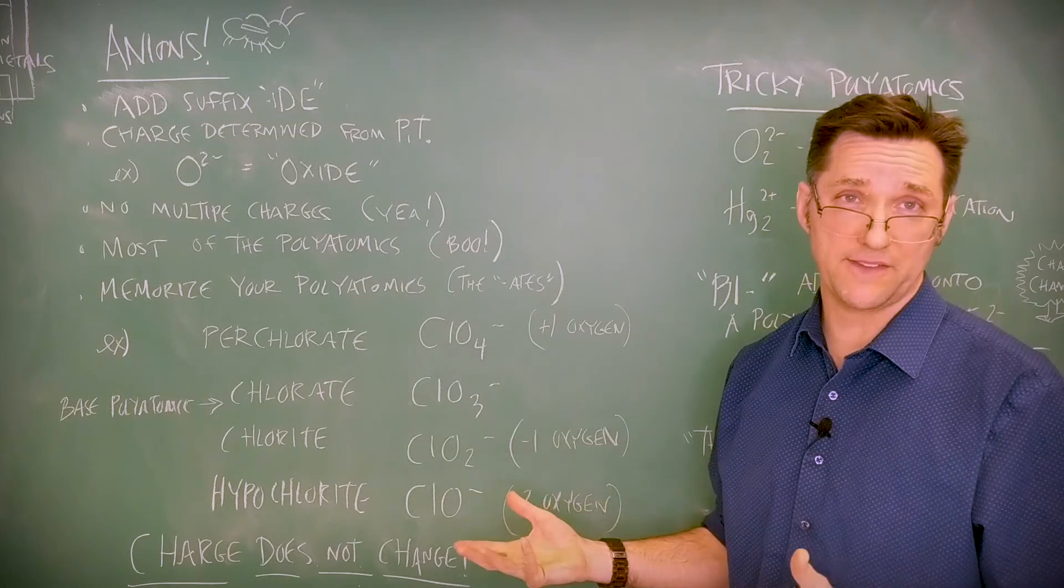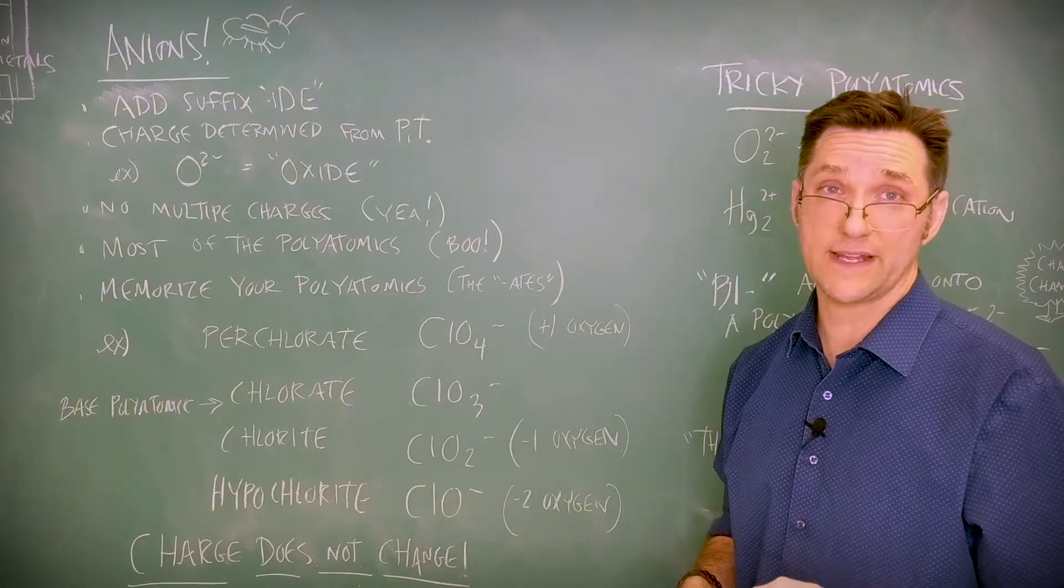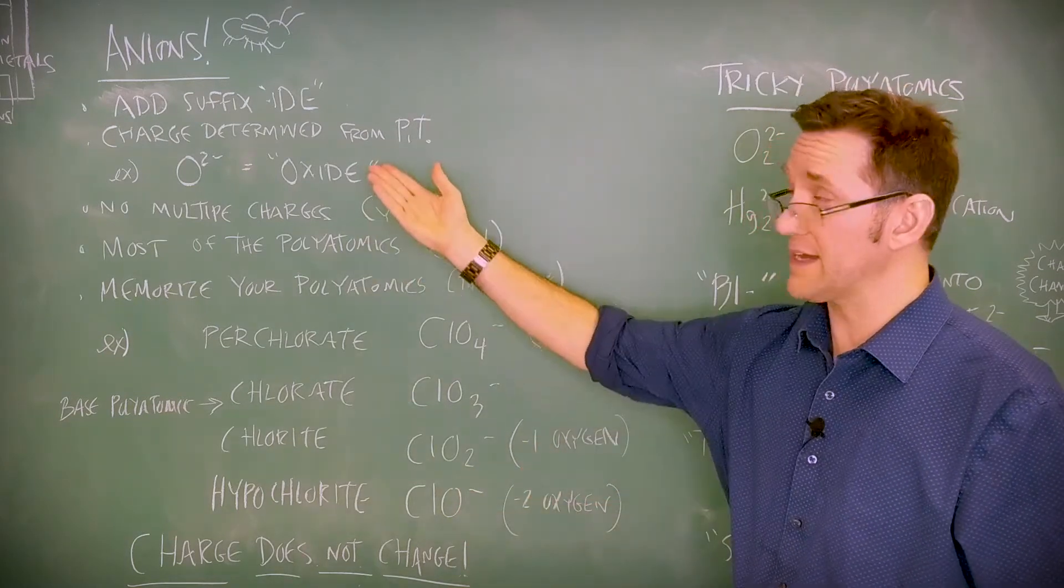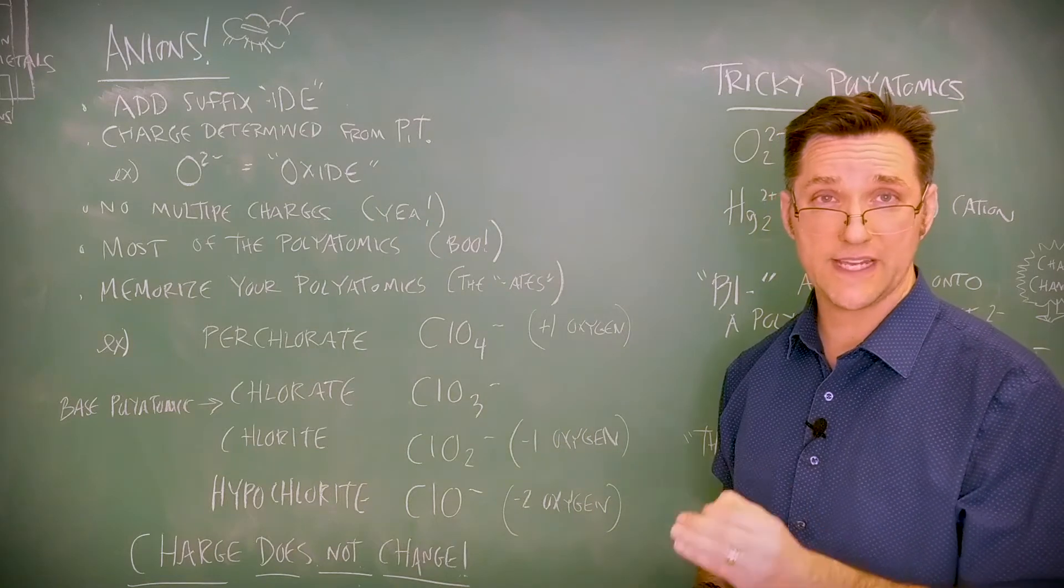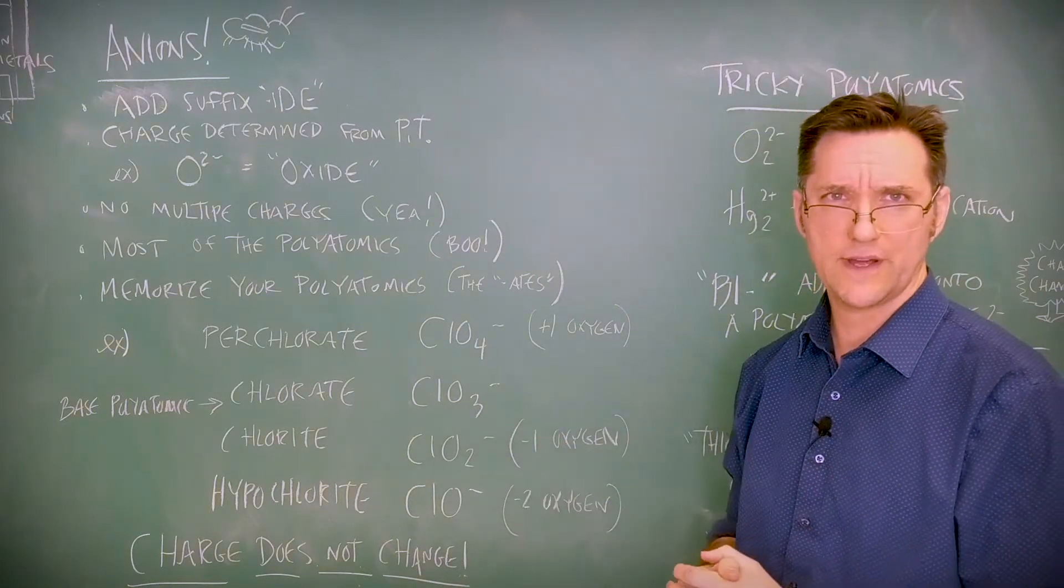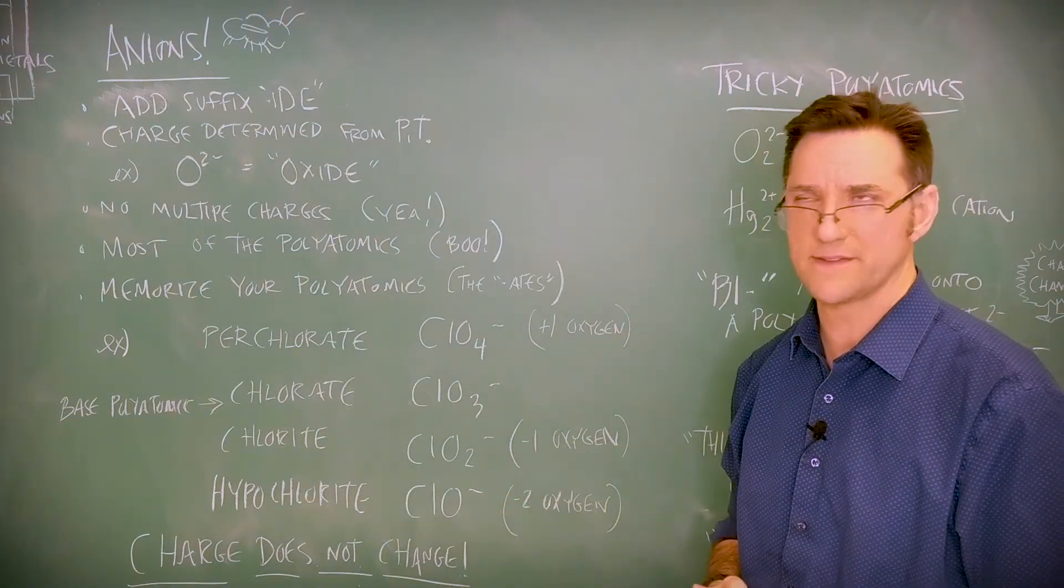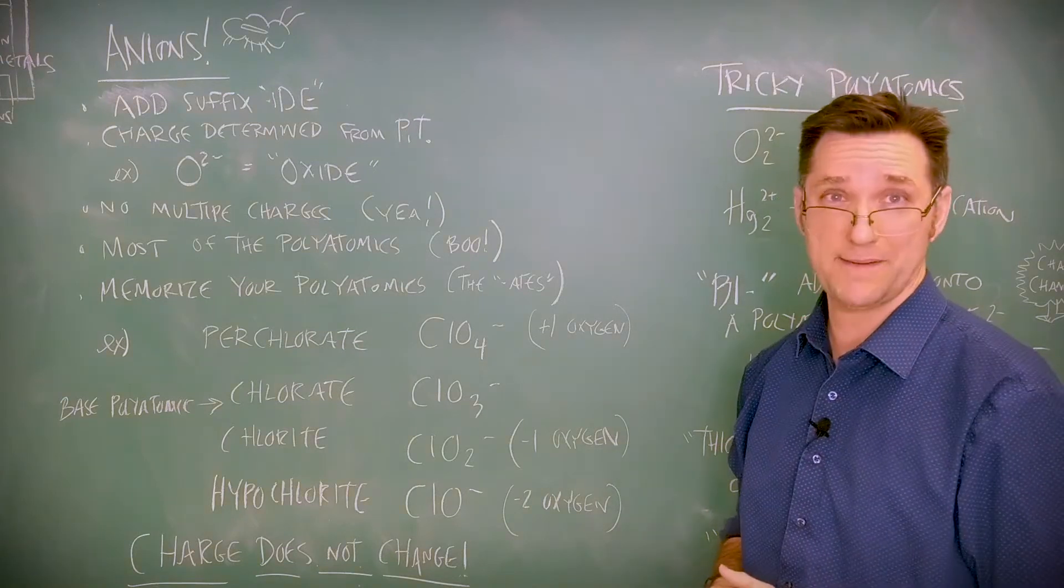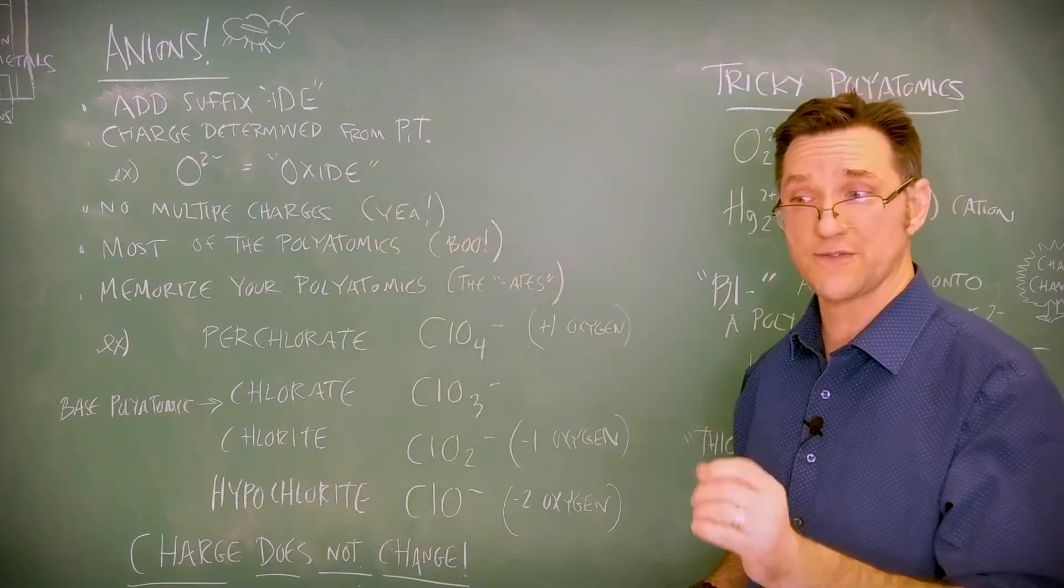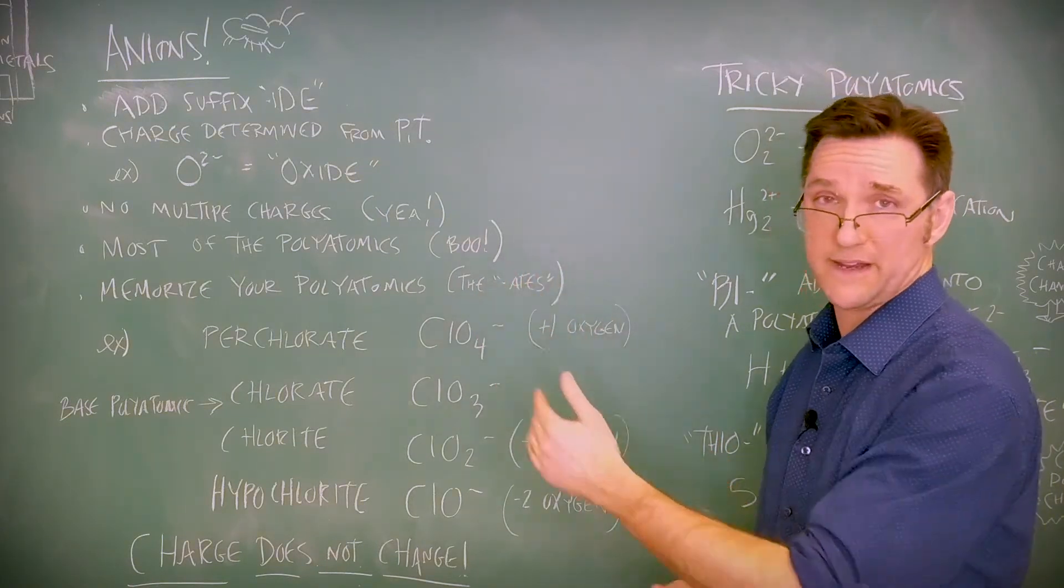Anions. I got good news and bad news about anions. The monatomic anions are pretty easy, right? There are no multiple charge monatomic anions. And then you can get used to the endings very quickly. We change the ending to -ide, which is sort of the period at the end of the chemical sentence. Oxygen becomes oxide, charge from the periodic table. Halogens minus one, chalcogens minus two, pnictogens minus three.